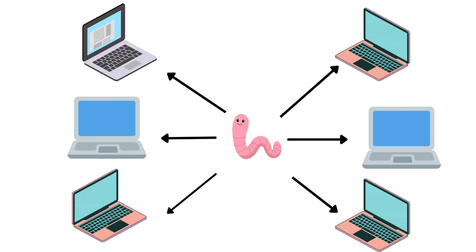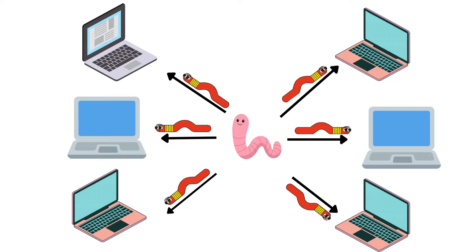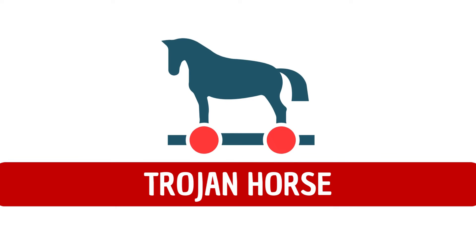One thing everyone should know about worms is that they don't need to attach themselves to a program to spread. They can independently replicate and propagate across networks, causing widespread damage without any human interaction. Then there's the Trojan horse — the master of disguise.